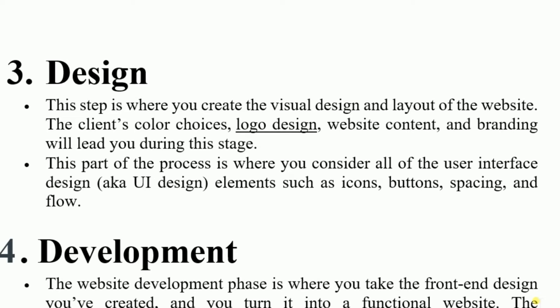The third step is design. This step is where you create the visual design and layout of the website. Once discovery and planning are over, the next step is designing using different methods — first we create the layouts, then plan for the coding. Which language to take, front-end tools, back-end tools if it is a dynamic website, the client's color choice, logo design — all are planned here. Website content and branding will lead you during this stage, and this is where you consider all user interface design elements such as icons, buttons, spacing, and flow.